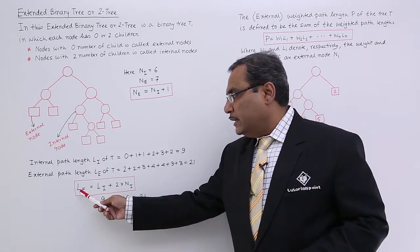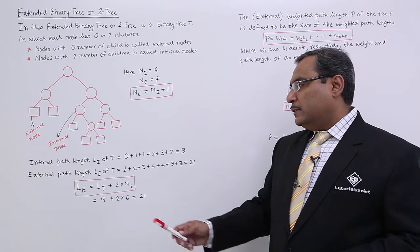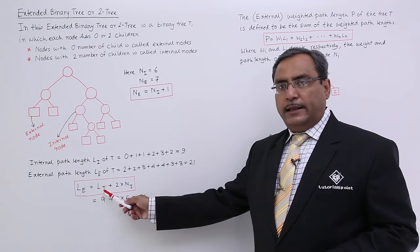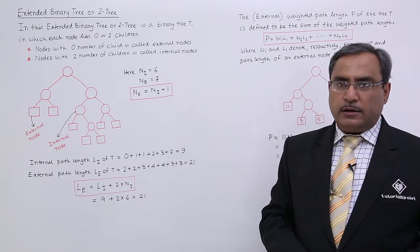Now you see 9 into 6 into 2 is equal to 21 and that is always maintained. So we are going to get another equation here: external path length is equal to internal path length plus 2 into number of internal nodes.